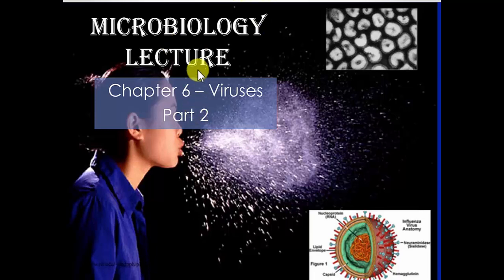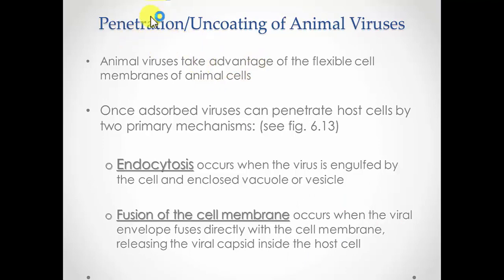The next stage in the replication cycle involves the penetration stage, and that is immediately followed by uncoating. So it goes adsorption, penetration, uncoating, followed by synthesis, assembly, and release. I'm combining the next two stages because they happen in an immediate sequence following each other — almost in the same breath.